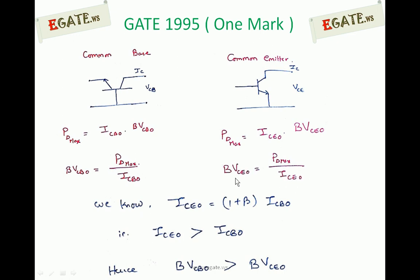So BVCEO is smaller compared to BVCBO. Hence we can say that breakdown voltage of common base is greater than breakdown voltage of common emitter.